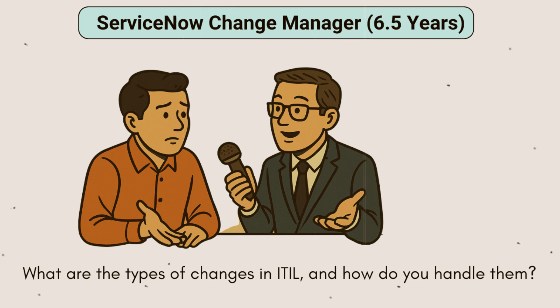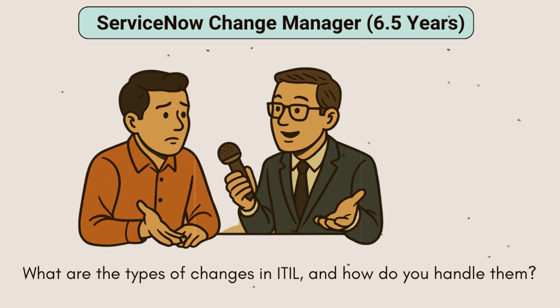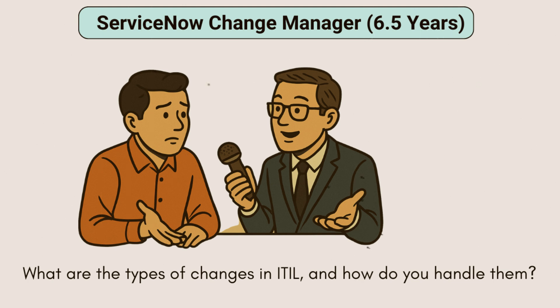Then we have the last type which is emergency change. These are the high priority changes and they need to be fixed immediately because they have been created from an incident. These high priority changes are needed to fix something urgent like a production outage or security vulnerability. They are implemented quickly but must be reviewed afterward by the CAB. So these are the types of changes we have.